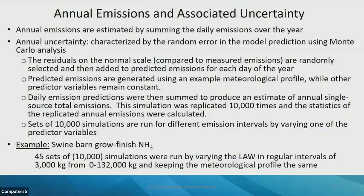The predicted emissions were generated using an example meteorological profile while the other predictor variables remained constant. For each day of the year, randomly selected residuals were added and summed to produce a single-source annual total emission. This was done 10,000 times, and the statistics of those replicated annual emissions were calculated. We did these 10,000 simulations for each of the different emission intervals, varying one predictor variable at a time.